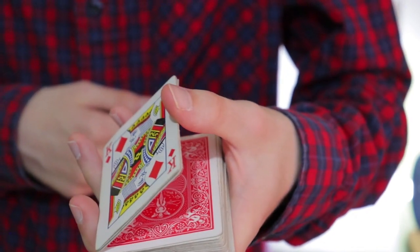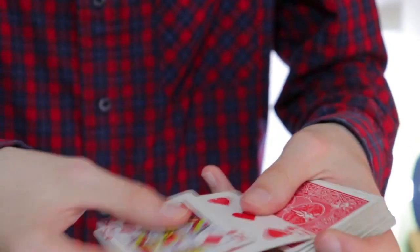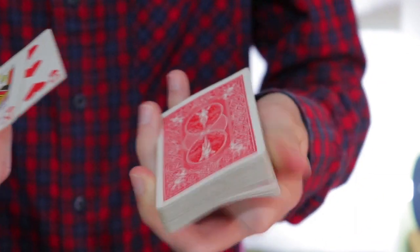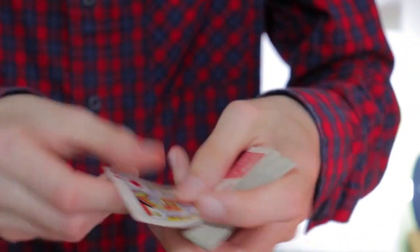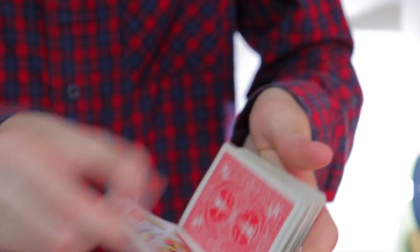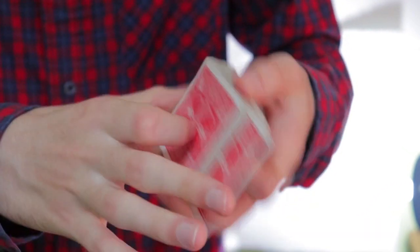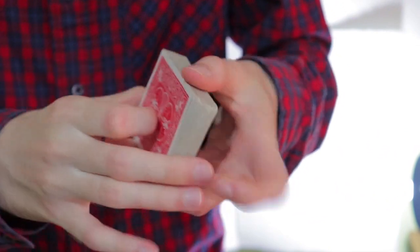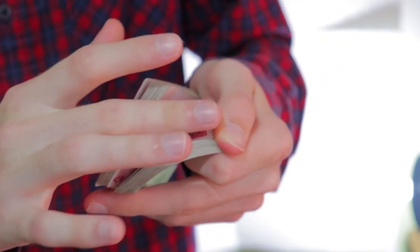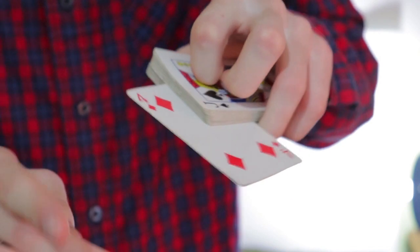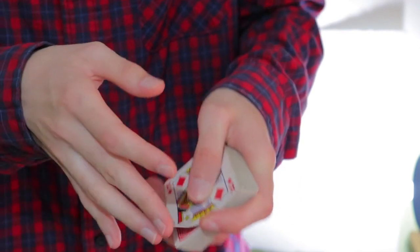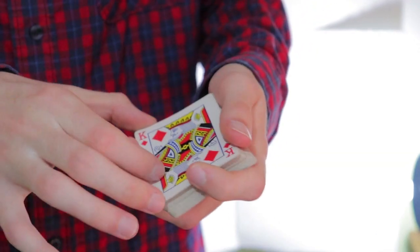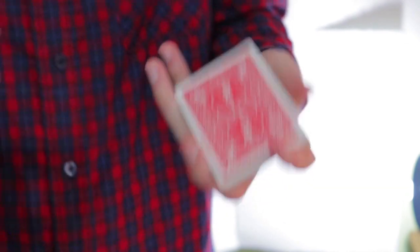То есть, сейчас здесь две у нас карты. After which with your right hand, you can raise these two cards. Because you have two cards on the top, all the other cards fall. These two cards are slowly from the top. And then you can turn them down and take the card of the viewer in the center. But I recommend not to use this as a trick.